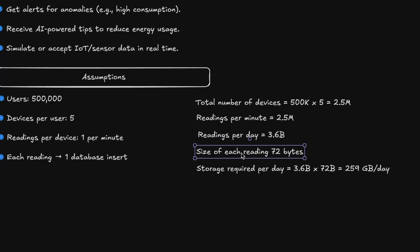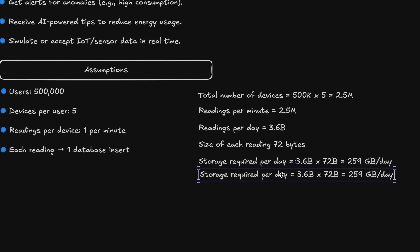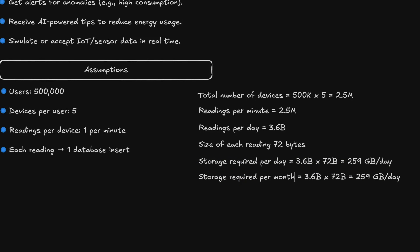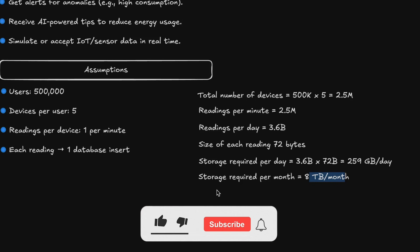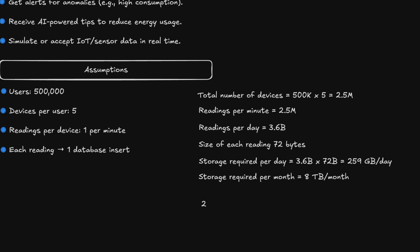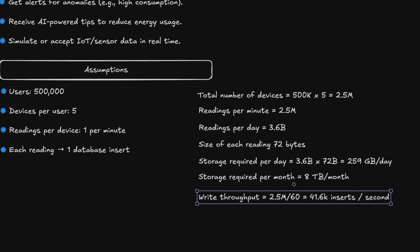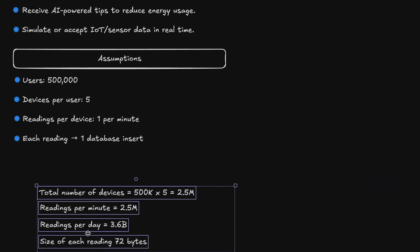It's quite a lot of data, but there are databases that can handle this. Storage per month equals about 8 terabytes. Applying 50% compression, we can get this down to 4 terabytes per month. For write throughput: 2.5 million devices × 60 seconds gives roughly 41,600 inserts per second — let's assume 40,000. It's a big number to process per second, but the payload is relatively small. This is the load we want to support.